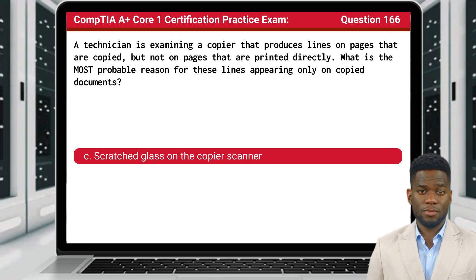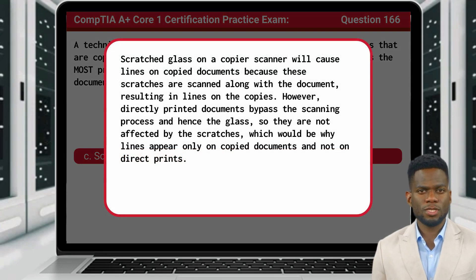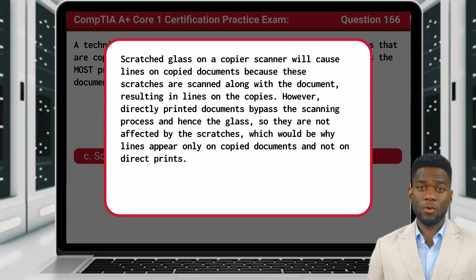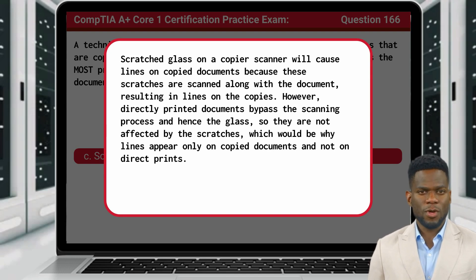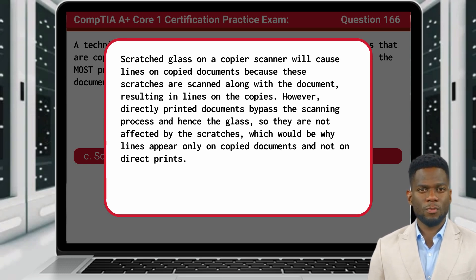The answer is C: Scratched Glass on the Copier Scanner. Scratched glass on a copier scanner will cause lines on copied documents because these scratches are scanned along with the document, resulting in lines on the copies. However, directly printed documents bypass the scanning process and hence the glass, so they are not affected by the scratches, which is why lines appear only on copied documents and not on direct prints.